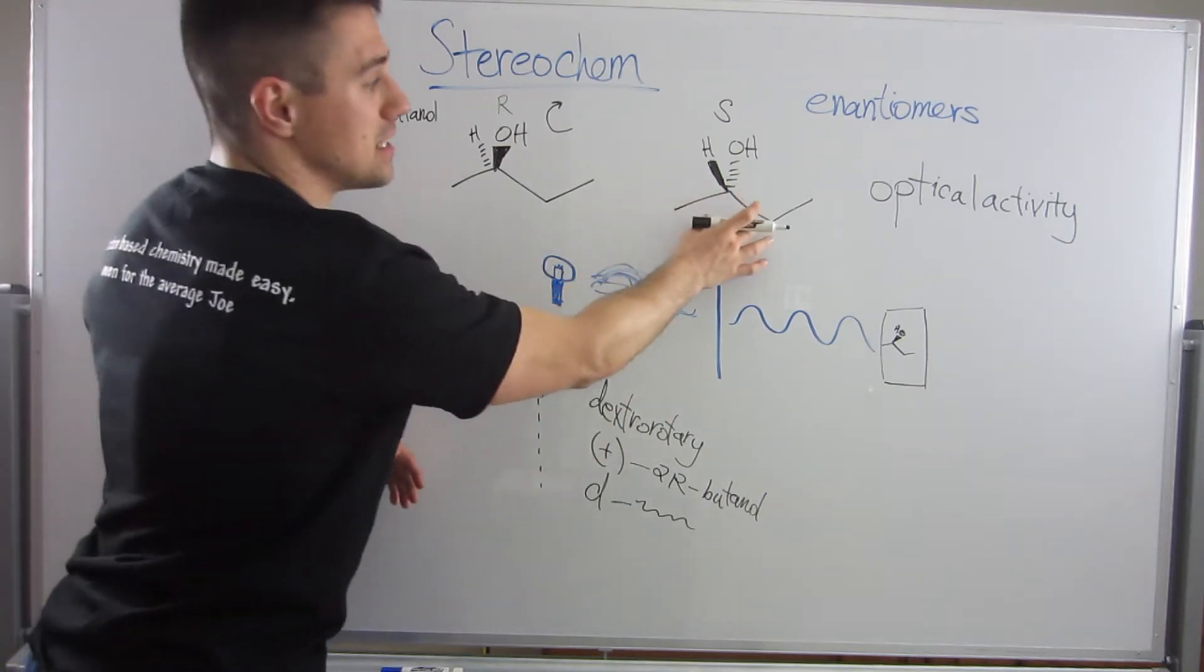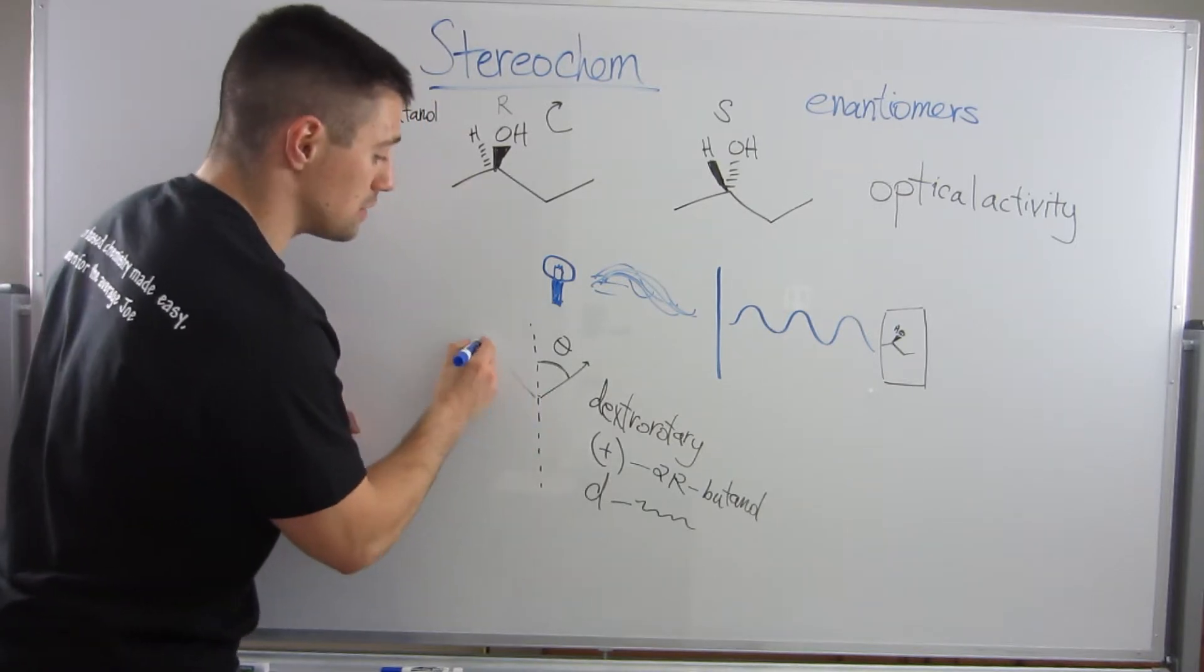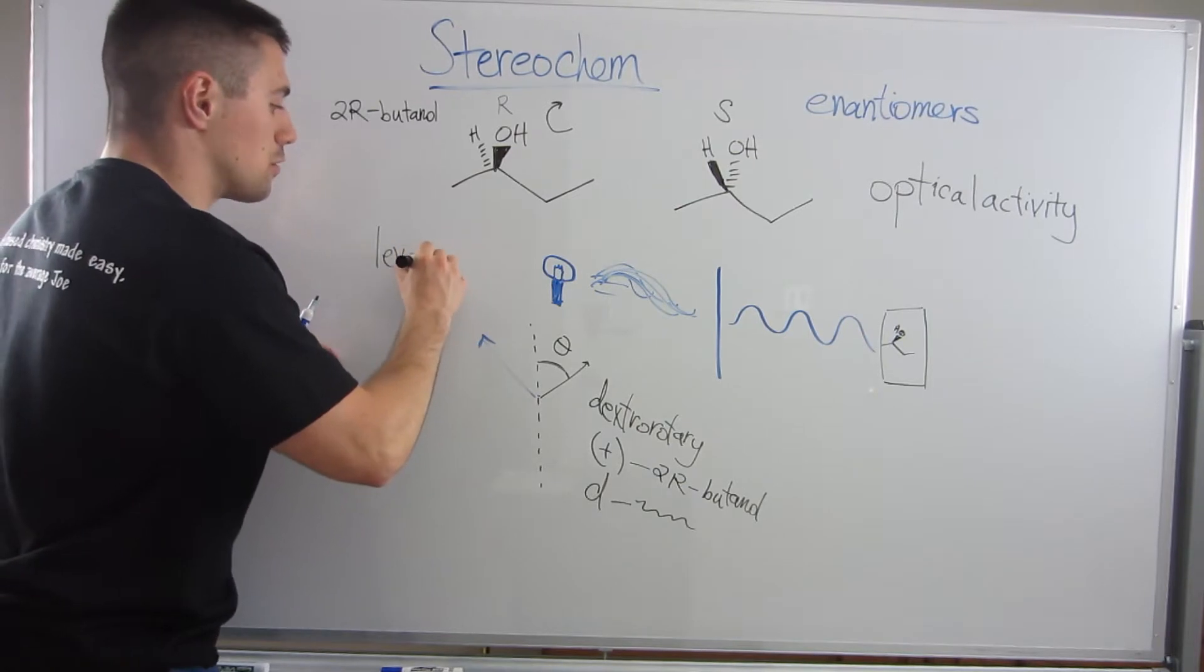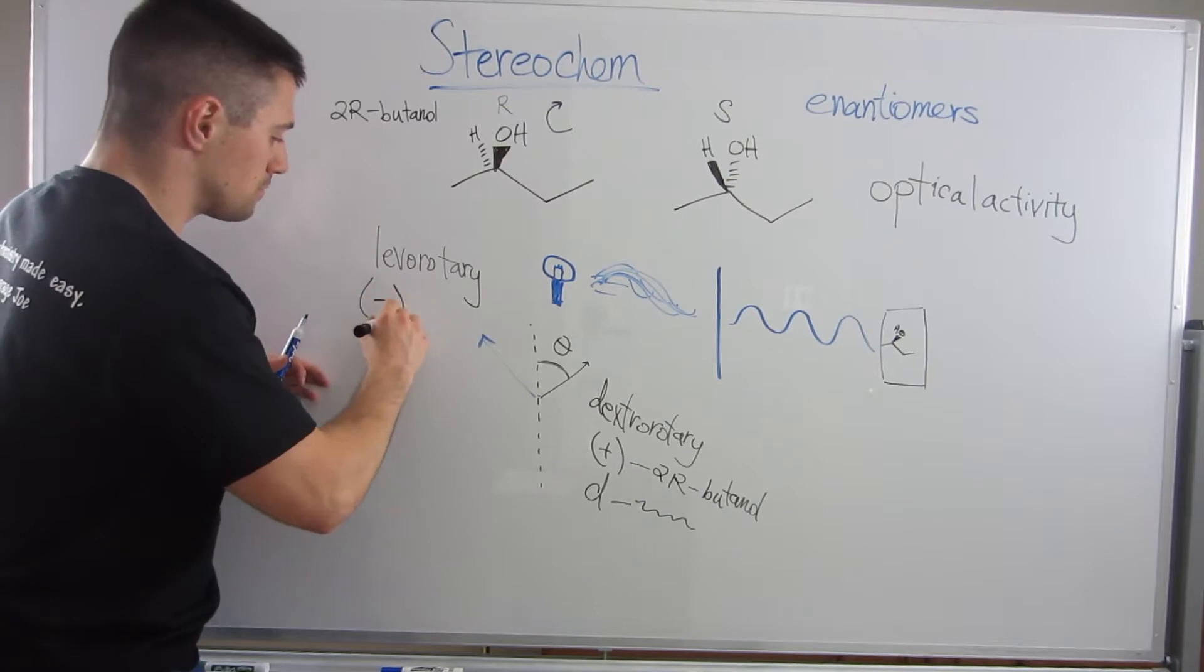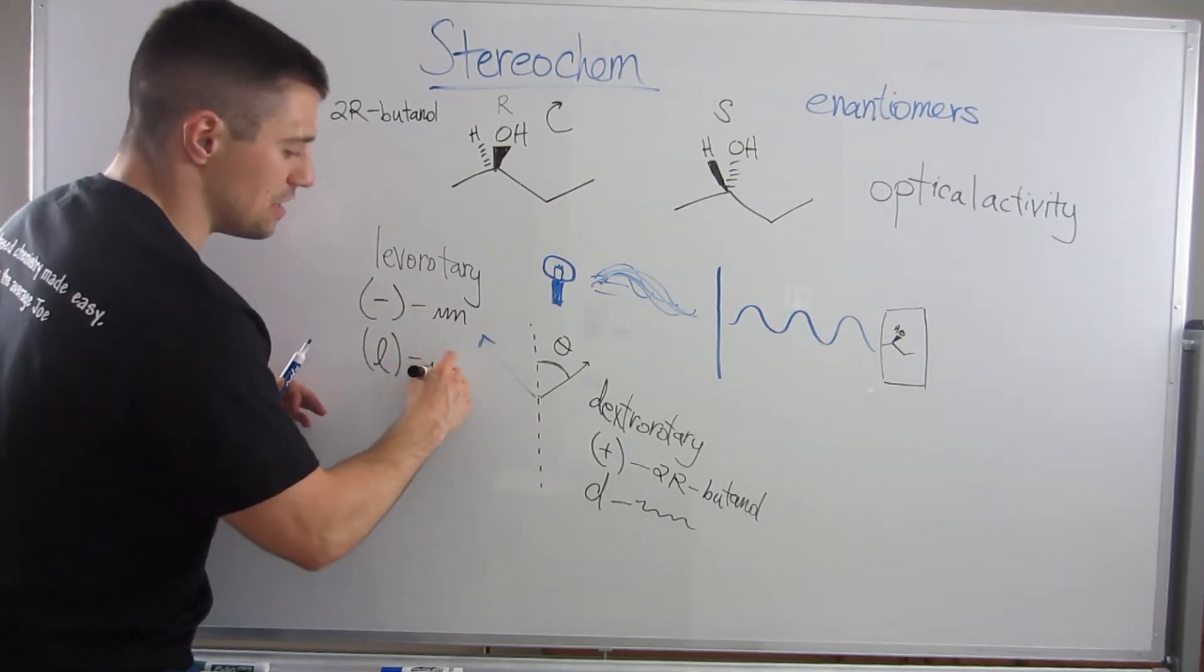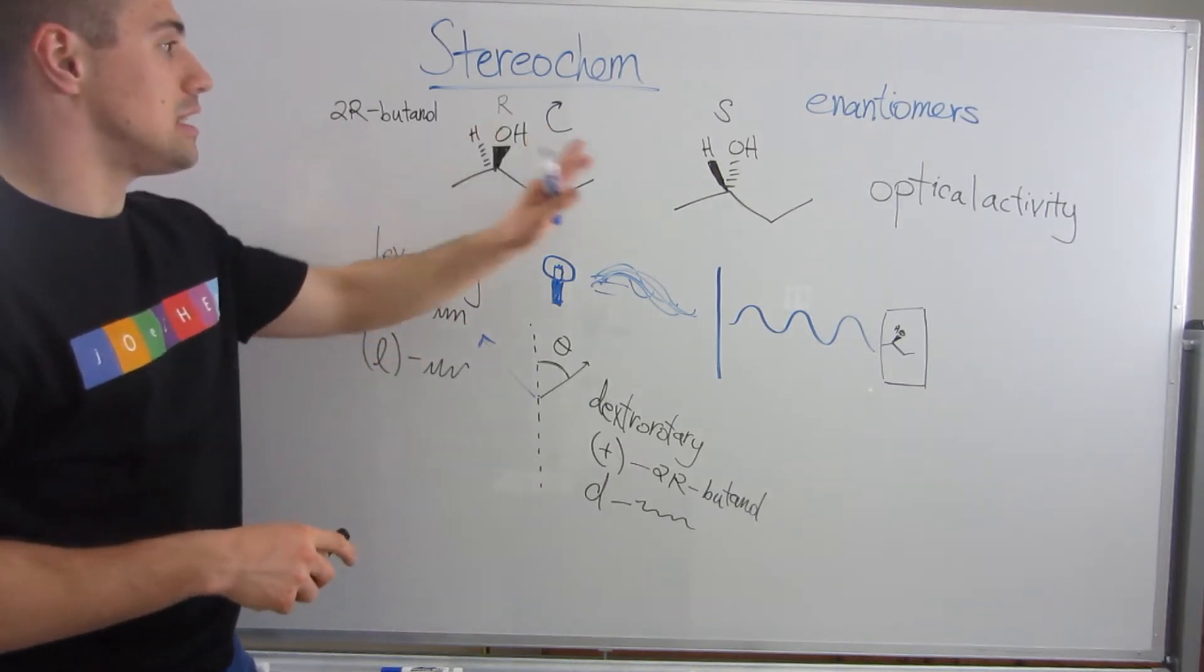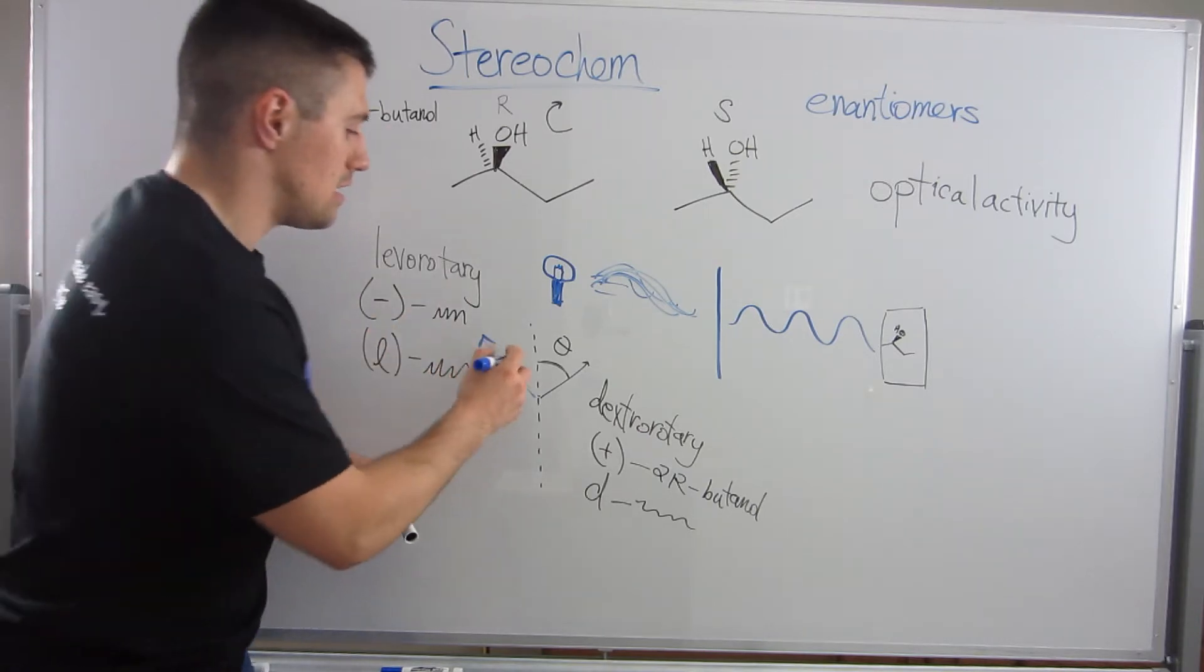However, if we looked at this enantiomer, which would bend it equally and opposite to the left, you would call that levorotary. You could signify that by a minus sign, then the name or an L and the name of the molecule. So enantiomers bend them equally and opposite different directions. But that is what is meant by optical activity.